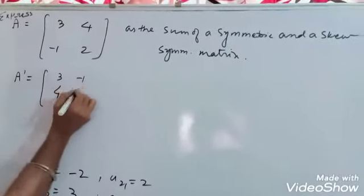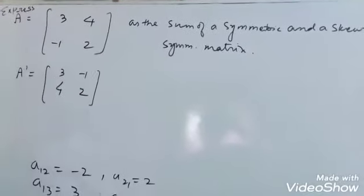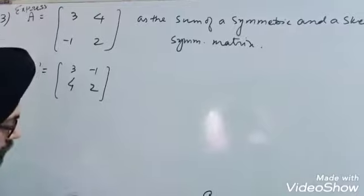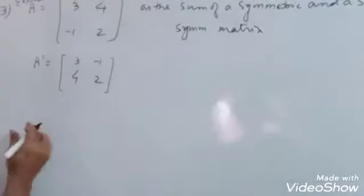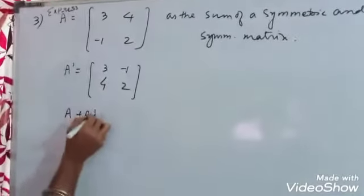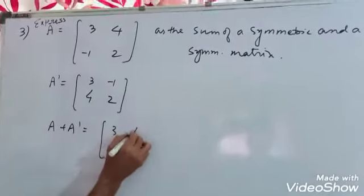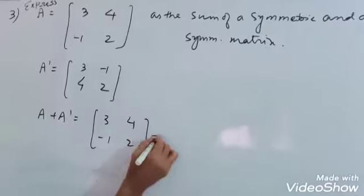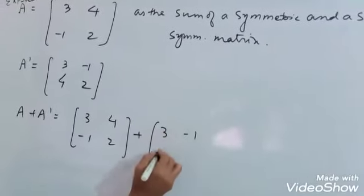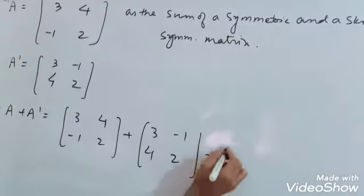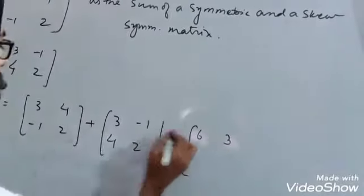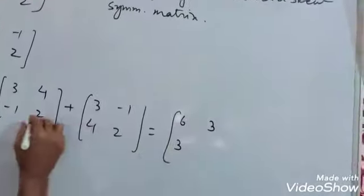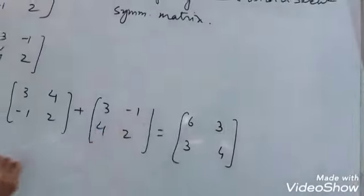First, what we have to find is A transpose. A is [3, 4; -1, 2]. Let's find A plus A transpose and then A minus A transpose. So A plus A transpose is [3, 4; -1, 2] plus [3, -1; 4, 2]. The sum is [6, 3; 3, 4].